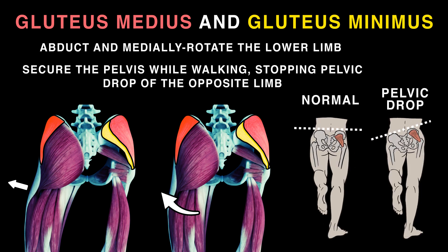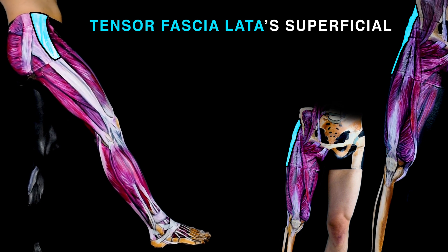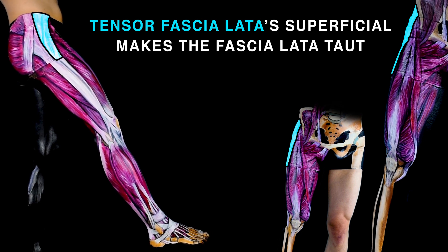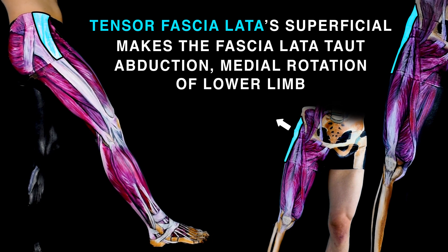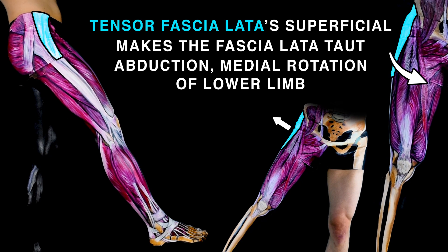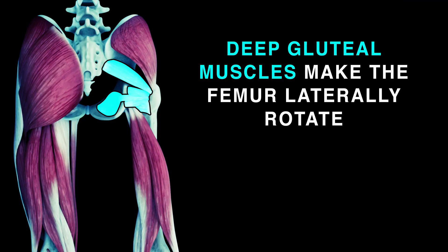Gluteus medius and minimus secure the pelvis while walking to stop pelvic drop of the opposite limb. Tensor fascia latae makes the fascia latae taut, so abduction and medial rotation of the lower limb is brought.